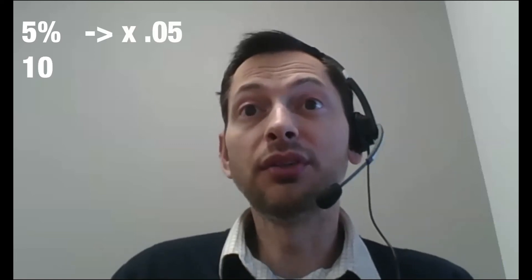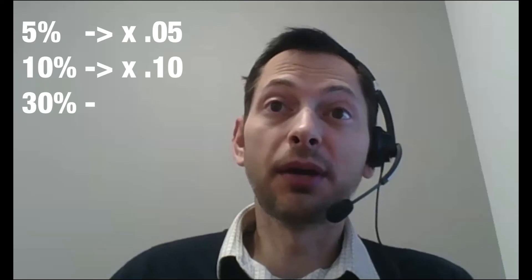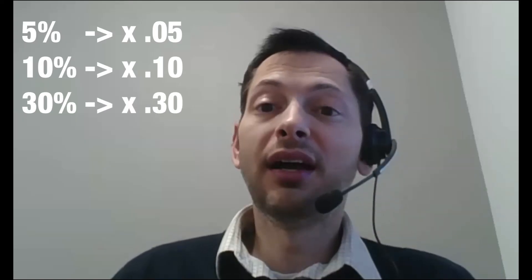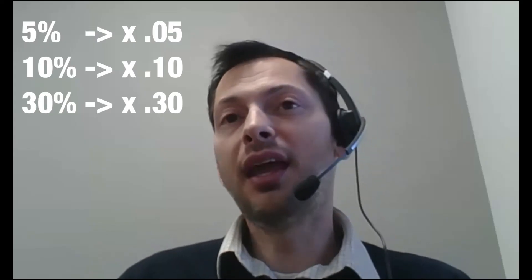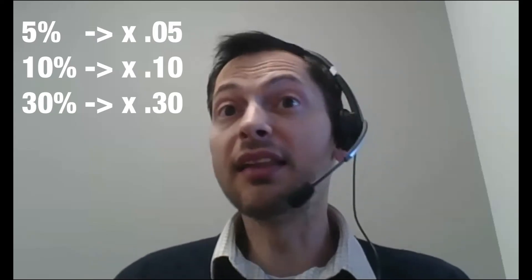If I want to just take a percentage, I would multiply by that percentage in decimal form. So for 5% of a number, I'd multiply by 0.05. For 10%, I'd multiply by 0.10. For 30%, I'd multiply by 0.30.